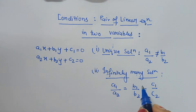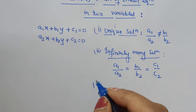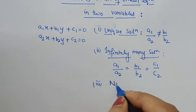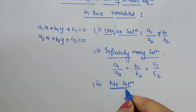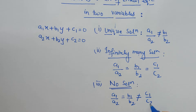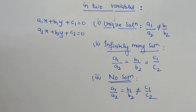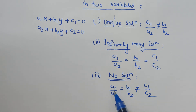Now the next is no solution. For this also we have a certain condition. For no solution, when you compare a1 upon a2, it is equal to b1 upon b2, but when you compare it with c1 upon c2, it will not be equal. So b1 upon b2 is not equal to c1 upon c2 in the no solution case.